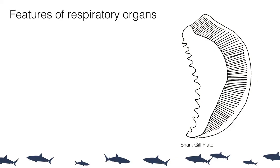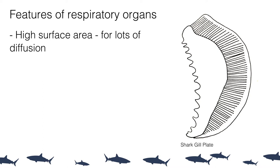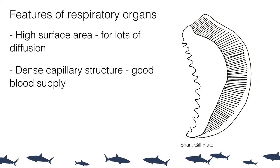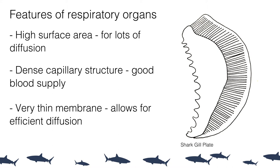There are three main factors that pretty much all respiratory organs have in common. First, they always have a very high surface area to allow for a lot of diffusion. They also have a very dense capillary structure — the very small blood vessels surrounding and running alongside the respiratory organs, so the gills in this example. Finally, they always have a very thin membrane or wall between the blood system and the external environment, which is the water. This allows for the most effective gaseous exchange.